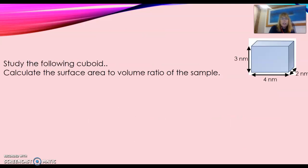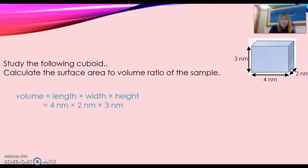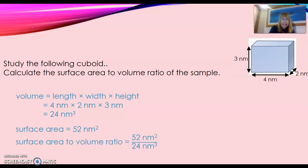Let's look at an example. We've got a cuboid — calculate the surface area to volume ratio. First calculate the surface area, remembering there are six sides, then calculate the volume, then look at the ratio. Volume is length times width times height: four times two times three gives 24 nanometers cubed. Do not forget your units. Surface area comes to 52 nanometers squared — remember it's a cuboid rather than a cube, so calculate carefully. Then surface area to volume ratio: 52 divided by 24 gives an answer of 2.17.